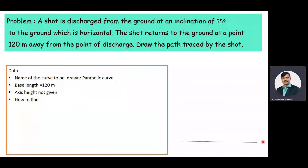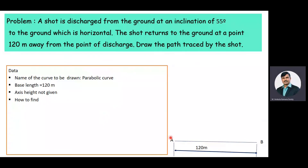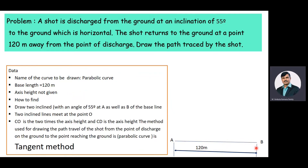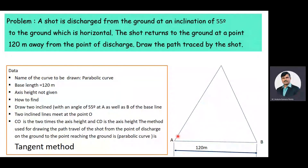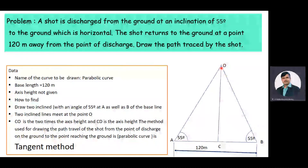Here AB is the base length of the parabola. Instead of giving the axis height, the inclination of the shot with the horizontal is given as 55 degrees. At A as well as B, draw two inclined lines making 55 degrees with AB. These two inclined lines meet at a point O. Then draw a perpendicular bisector to AB passing through O and name this point as C. CO becomes two times the axis height. Bisect CO and name that midpoint as D. Then CD becomes the axis height.